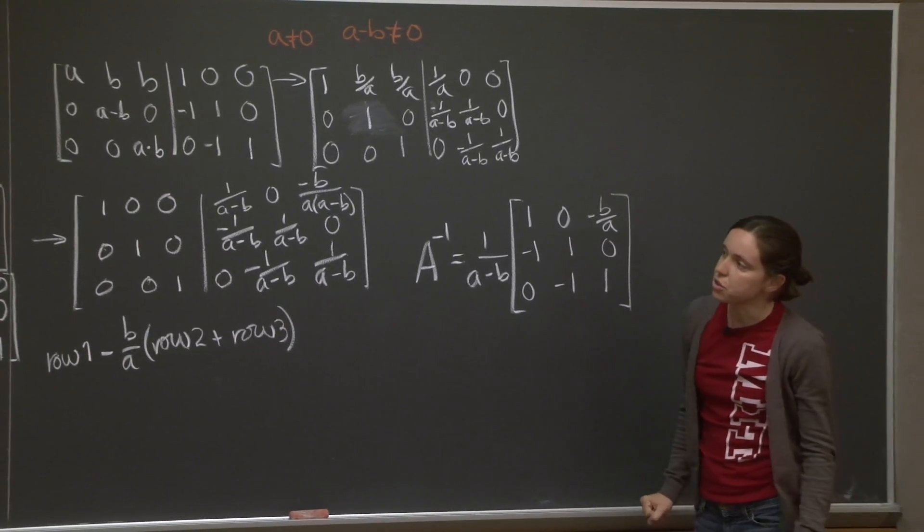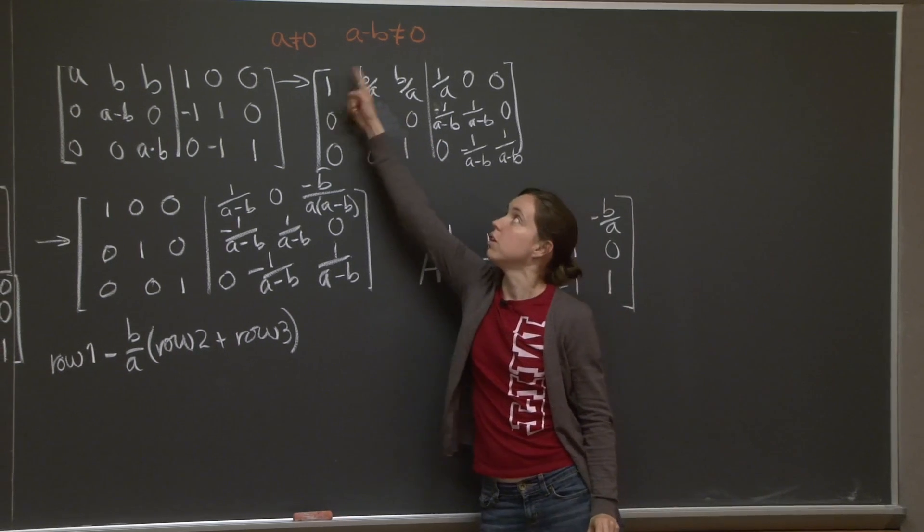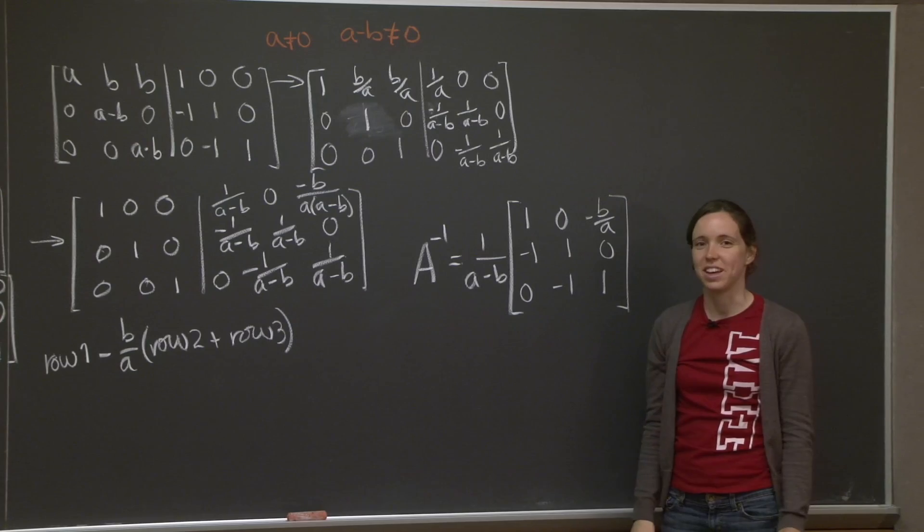And the other question was, what are the conditions on a and b for the matrix A to be invertible? Well, a has to be non-zero, and a has to be different from b. And we're done. That's it for today. See you next time.